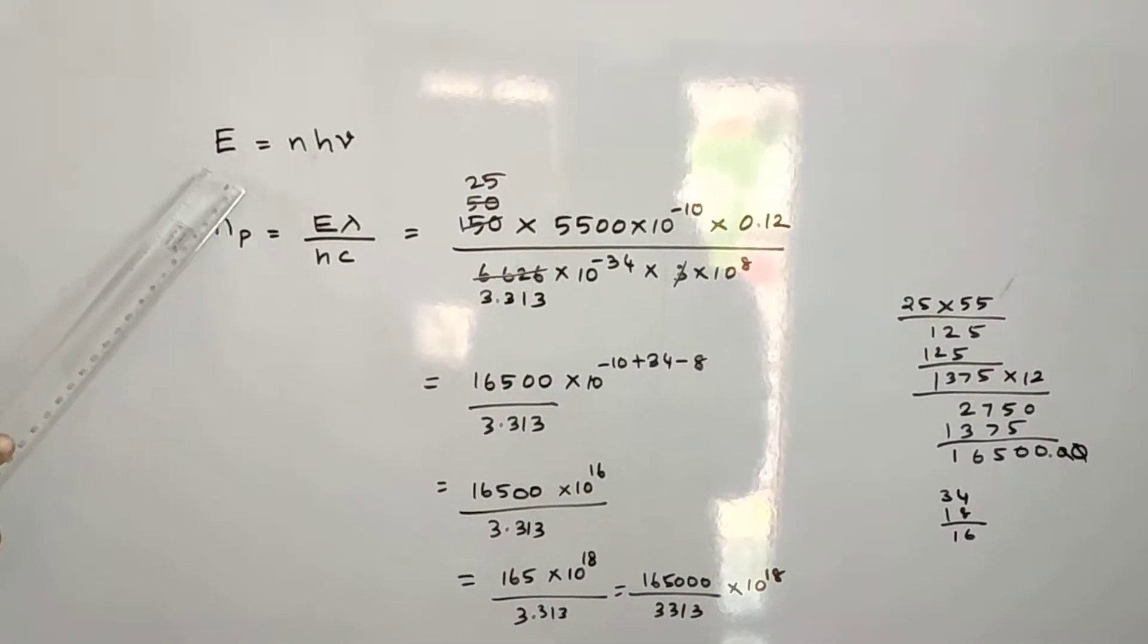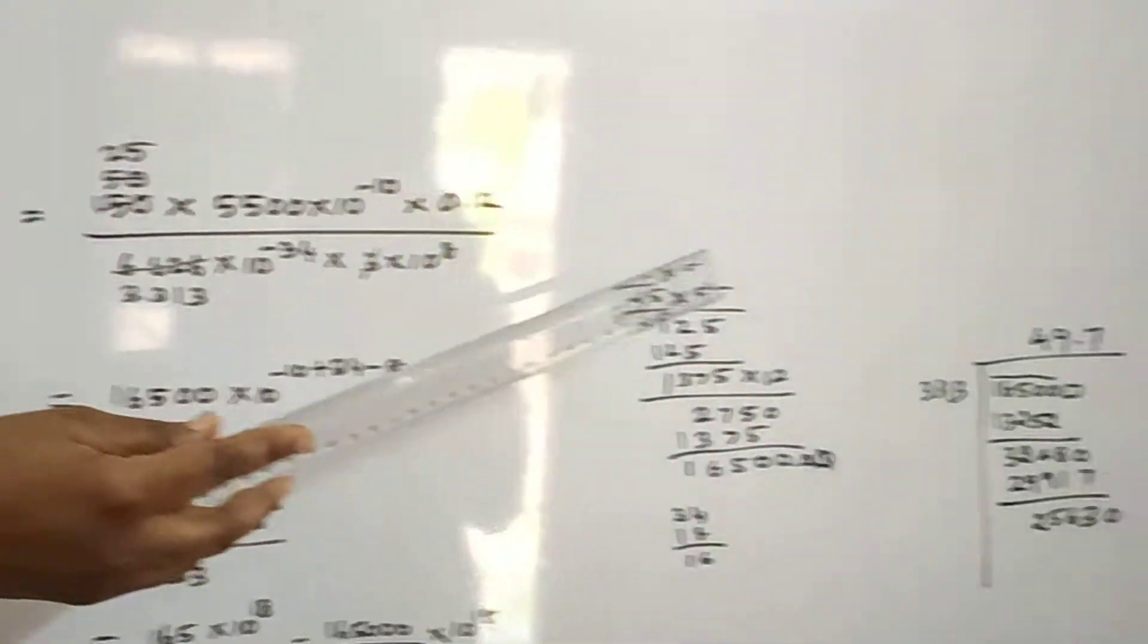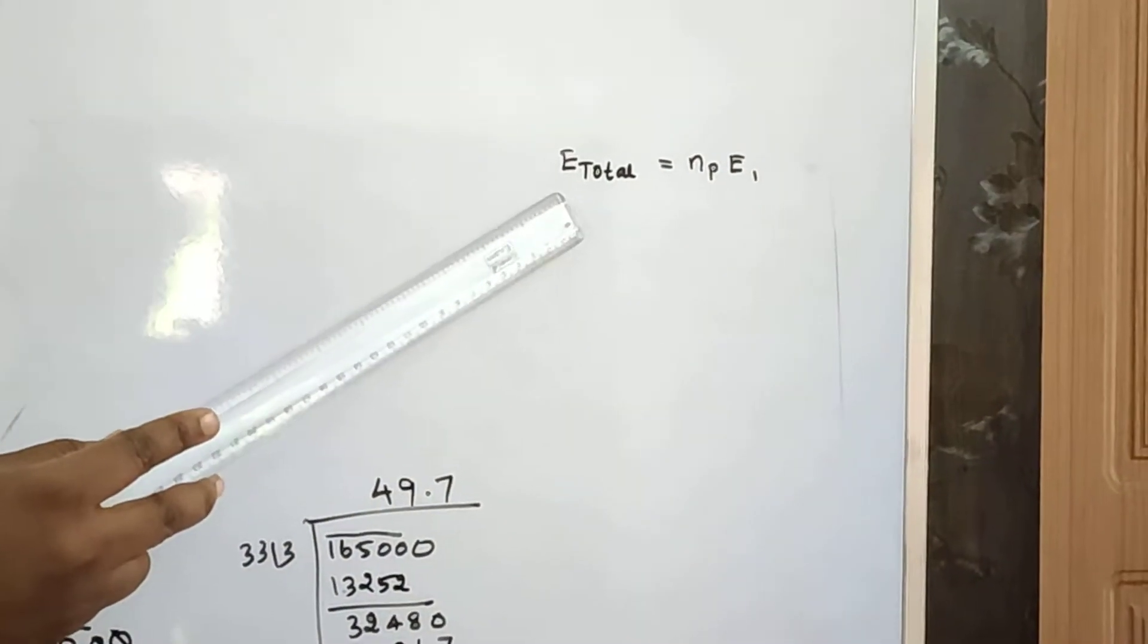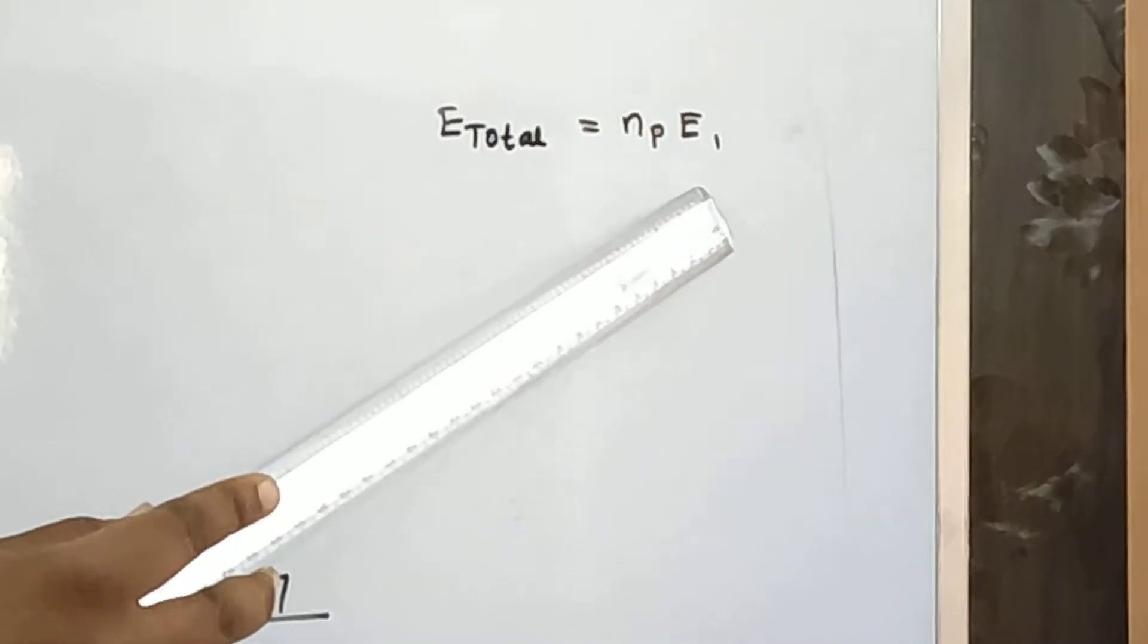In the formula, E is equal to N into H into nu. That means energy, total energy of photon emitted equal to number of photons emitted into energy of 1 photon.